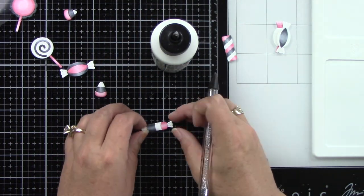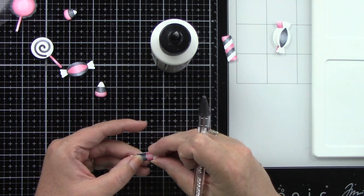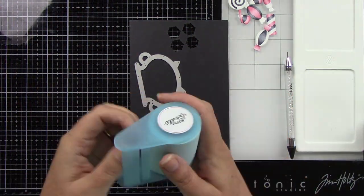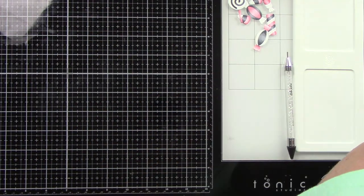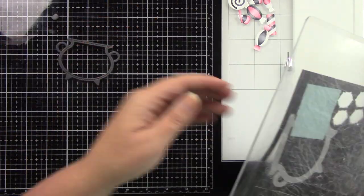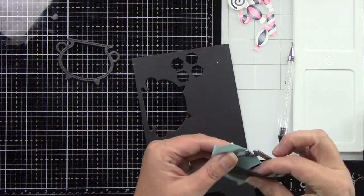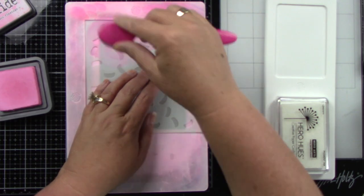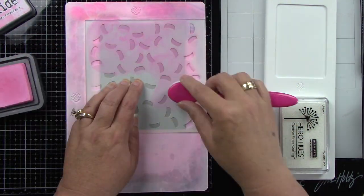Now I am going to die cut this fun cauldron from some onyx cardstock. It's kind of a black shiny cardstock which I thought was perfect for the cauldron. I am going to die cut this five times because I want to glue all of them together to give dimension for the shaker card. I added a lot of stuff to my shaker so I probably should have cut like two more pieces to make it a little bit thicker.